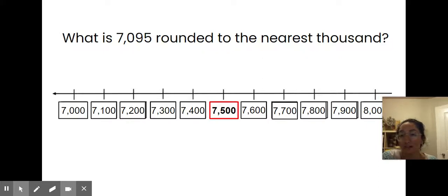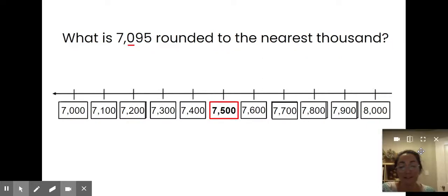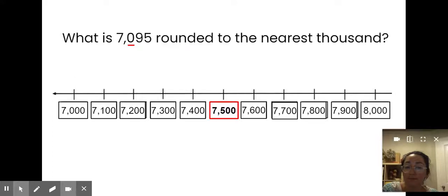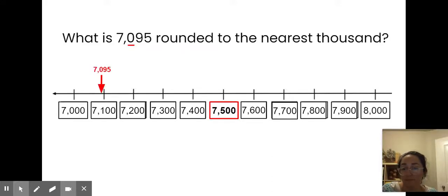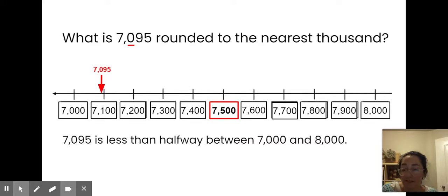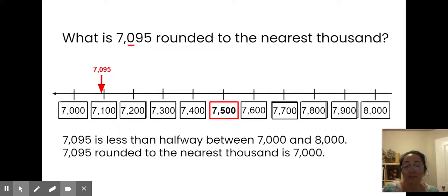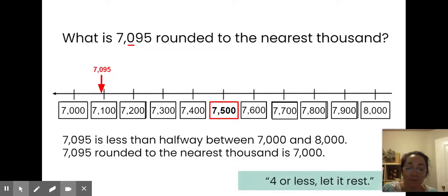What is 7,095 rounded to the nearest thousand? Here's my number line with an even thousand at either end — 7,000 and 8,000 — and there in the middle is 7,500. I counted by hundreds on each of these boxes to make it easier to locate my number. I have a zero in the hundreds place, so it's not even past 7,100. That means 7,095 is less than halfway between 7,000 and 8,000. So 7,095 rounded to the nearest thousand is 7,000. Remember, if your digit is four or less, let it rest — the digit in the hundreds place was a zero.